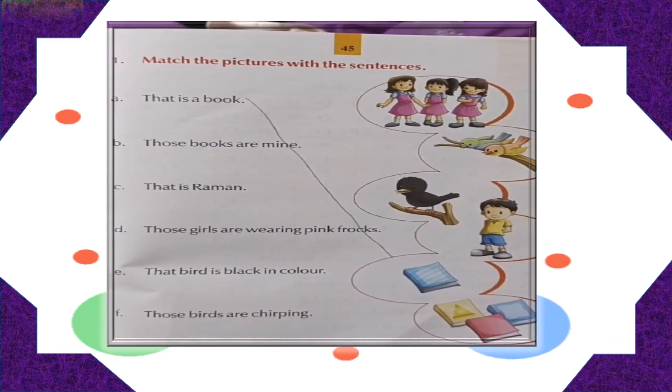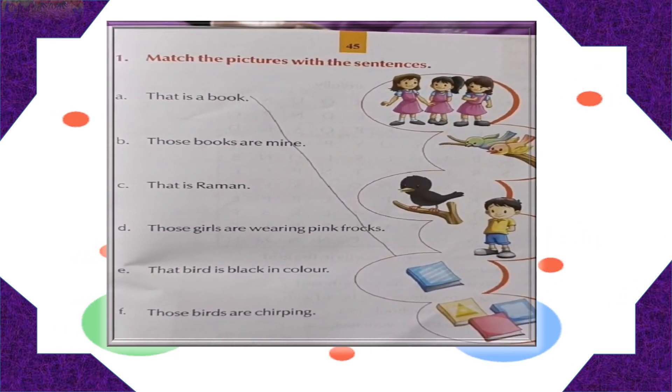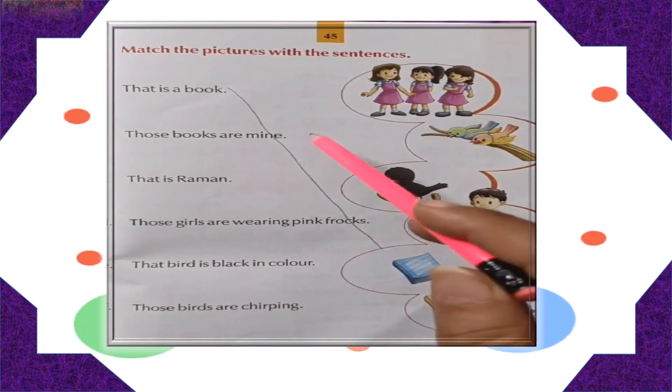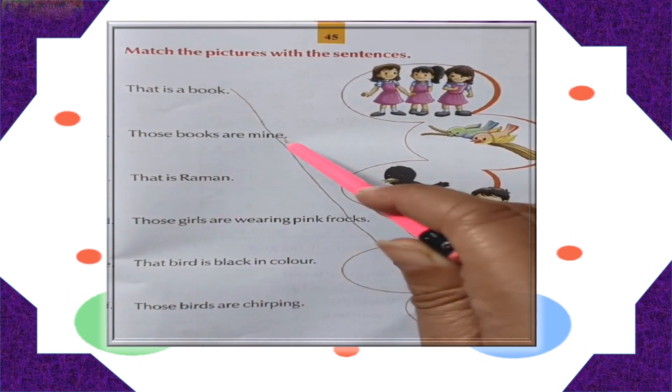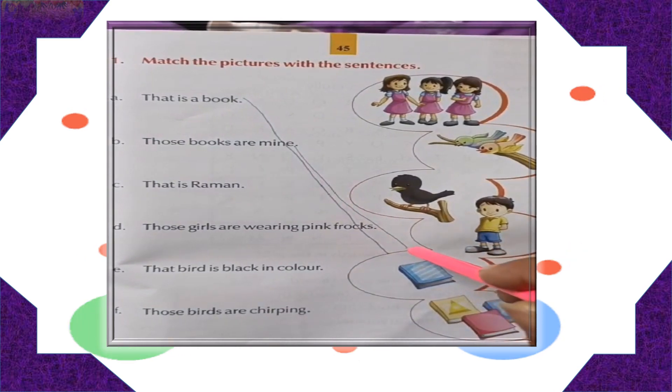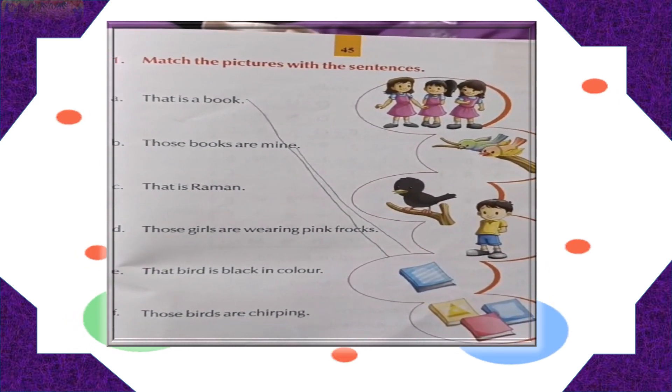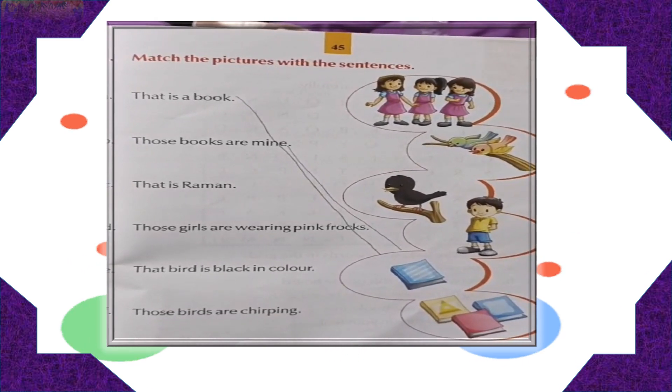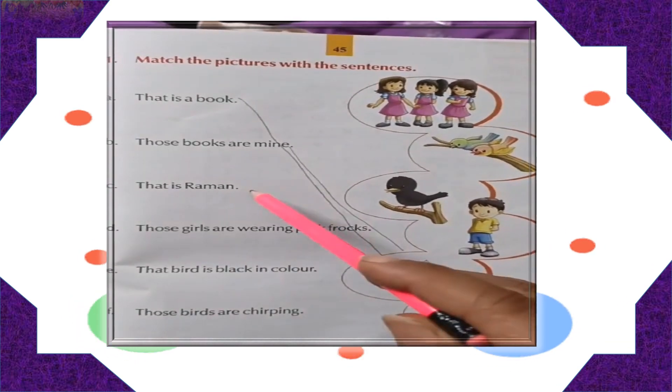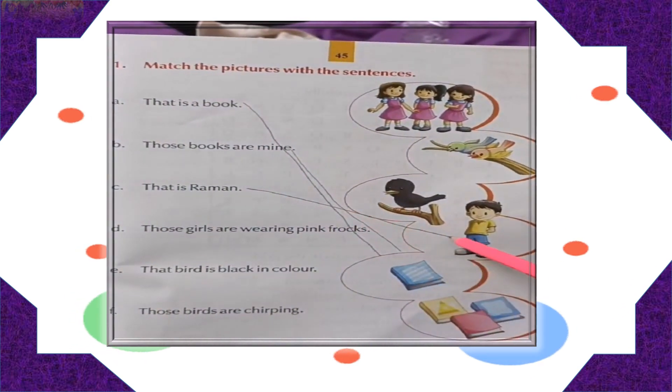Those books are mine. Again, with the books itself. That is Raman. We are talking about just one boy. Where is the one boy standing? Here it is.